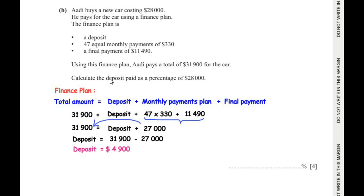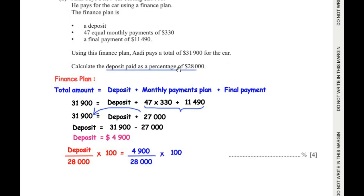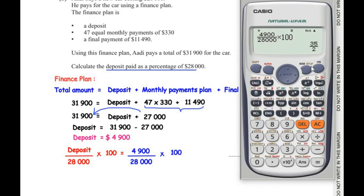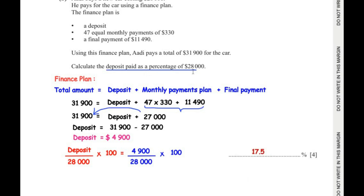The question asks us to calculate the deposit paid as a percentage of $28,000. So we write: (deposit ÷ 28,000) × 100 = (4,900 ÷ 28,000) × 100, which gives us 35/2 or 17.5%. The deposit paid as a percentage of $28,000 is 17.5%.